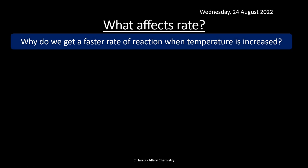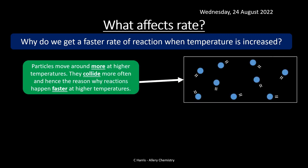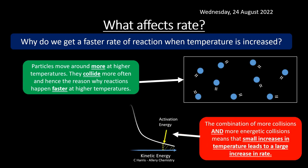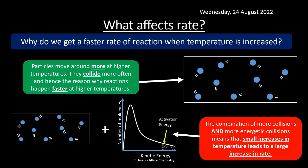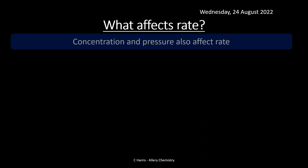Why does a higher temperature give a faster rate of reaction? At higher temperatures, particles move around more, so they collide more often. There's an increased likelihood of collisions. Plus the combination of more collisions and more energetic collisions means that even a small increase in temperature leads to quite big increases in the rate of reaction.